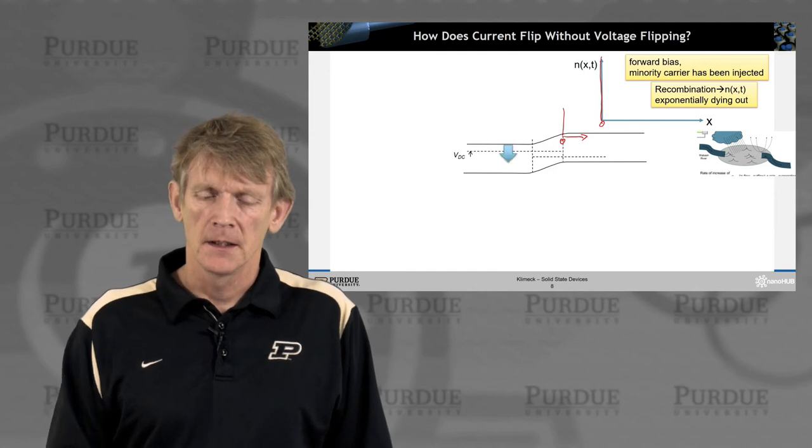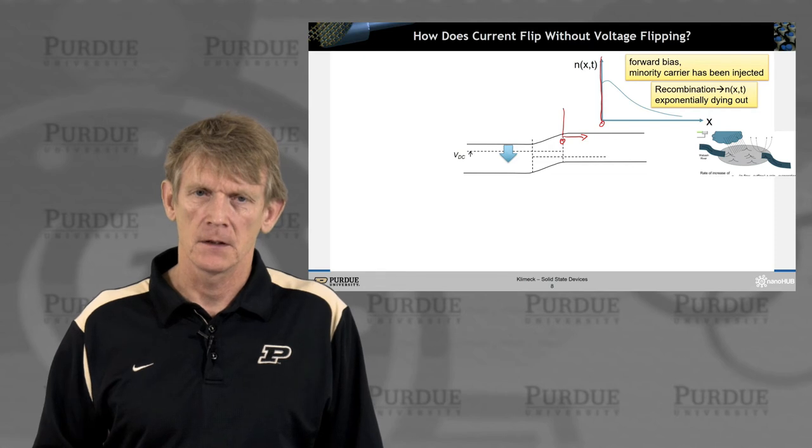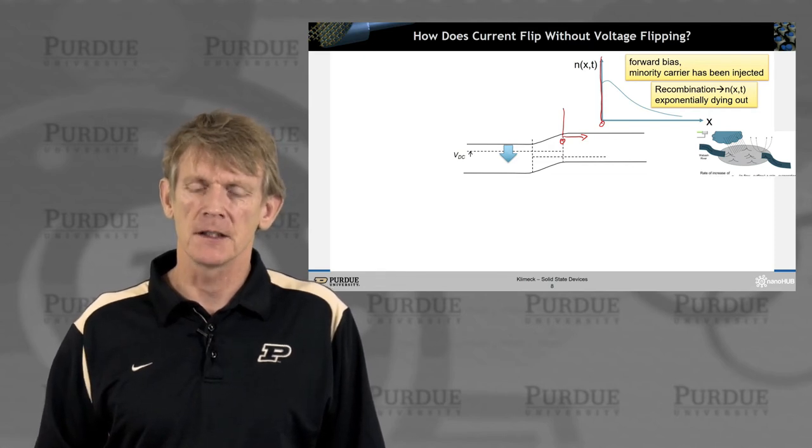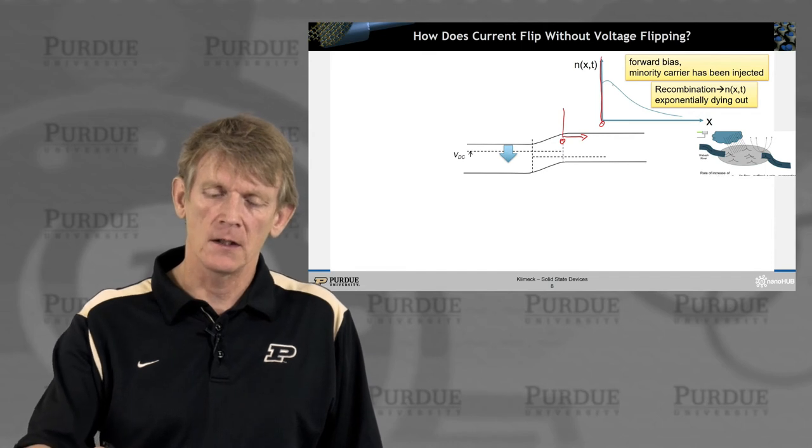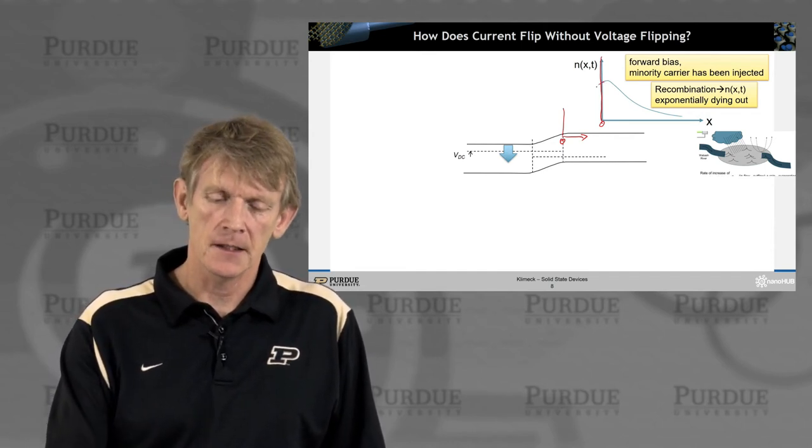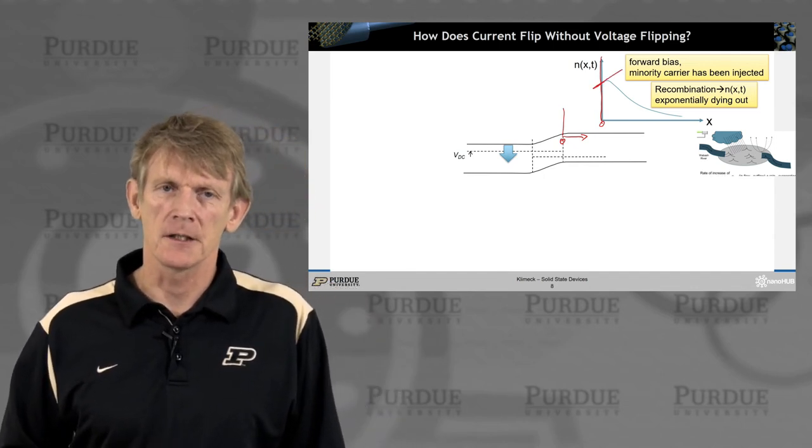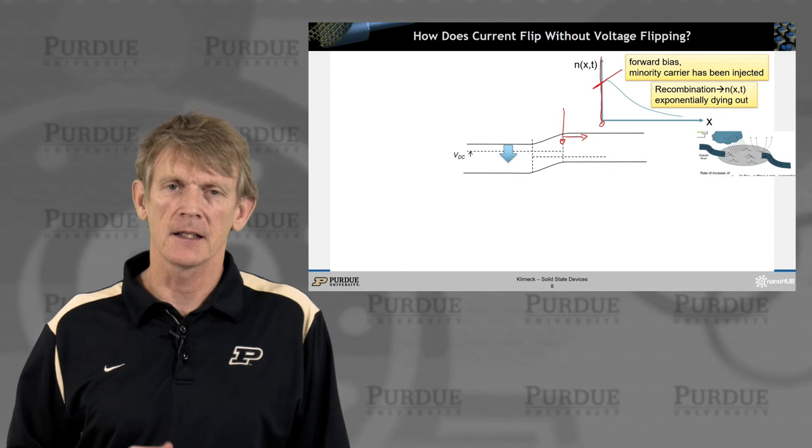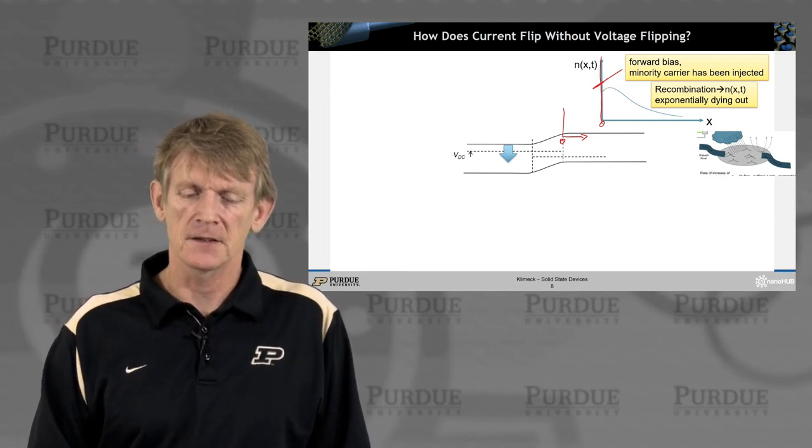So let's assume that we now apply a rapid signal on this device. What happens? Well, you cannot change overall the charge distribution in this device. But right at the edge here, you can nibble away at the charge that is available and that can, in that region, can diffuse into the other direction. And then as time goes on, you lose charge,